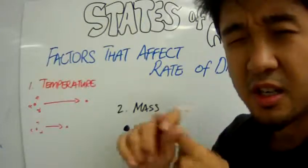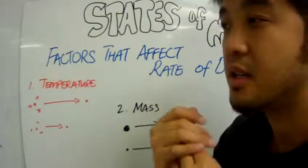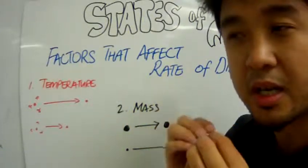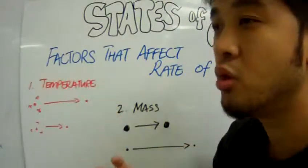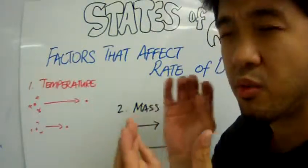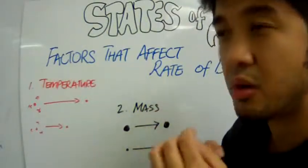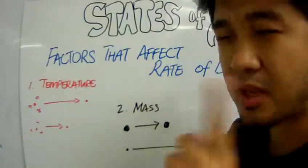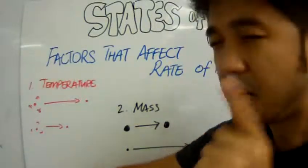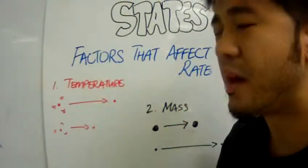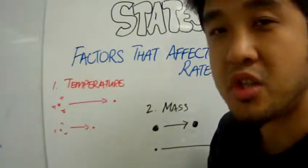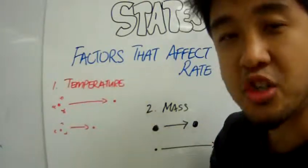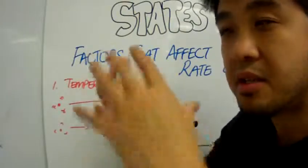First, temperature. Temperature affects the rate of diffusion simply because if you heat up the container or if you are in a very hot room or you have a beaker of water with warm water, what you will notice is that the rate of diffusion is much faster. Now, why is that? That is because when you have a high temperature, you are introducing more energy.